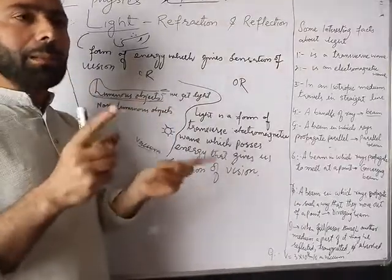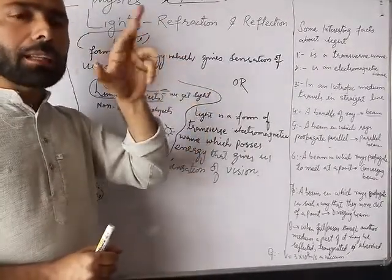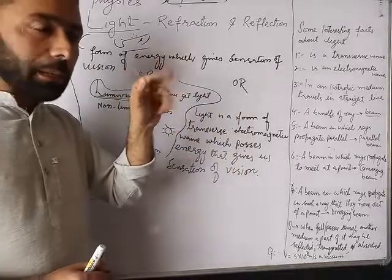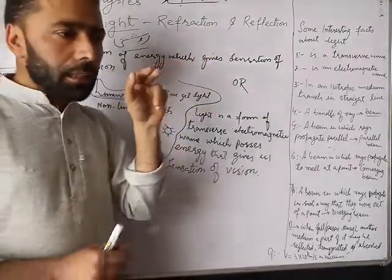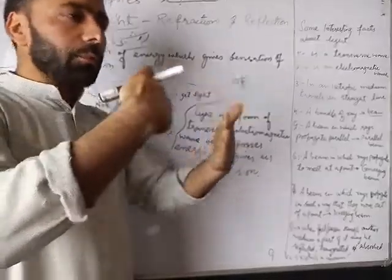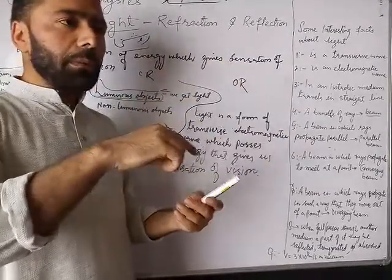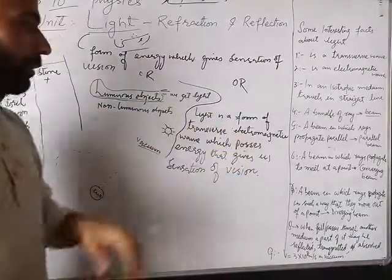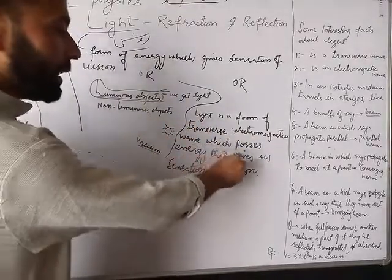Now — transverse: we know that waves are of two types, longitudinal waves and transverse waves. Transverse waves are those waves in which the particles of the medium vibrate in the perpendicular direction to their direction of propagation of energy — i.e., perpendicular to the transfer of energy in a medium. Light is a form of transverse electromagnetic energy which possesses energy that gives us a sensation of vision.